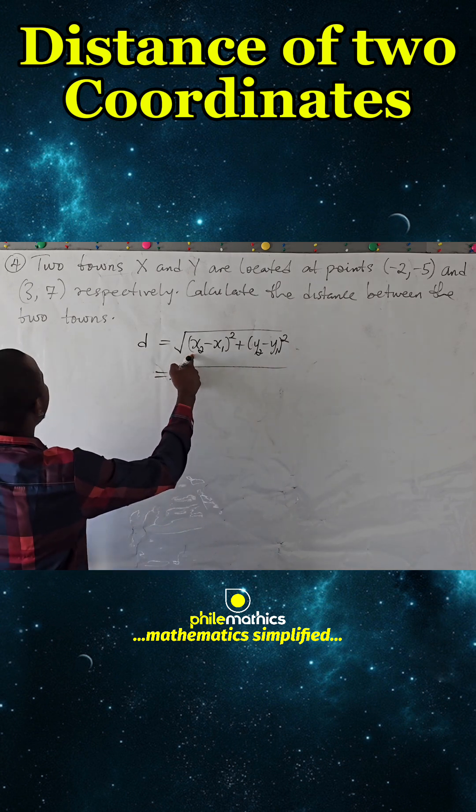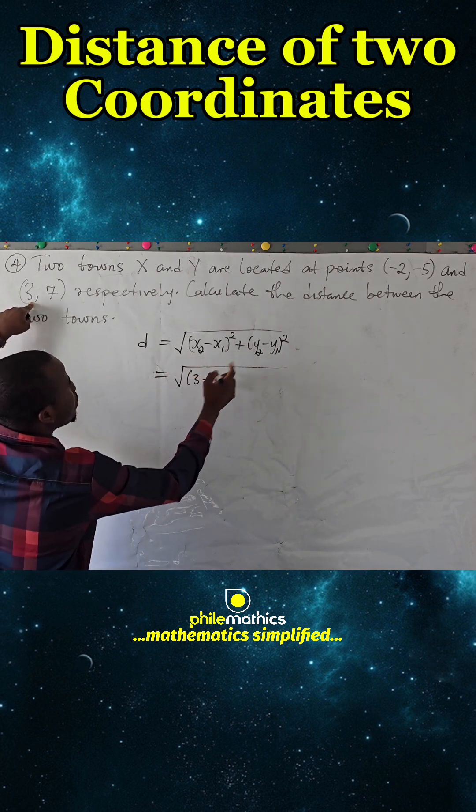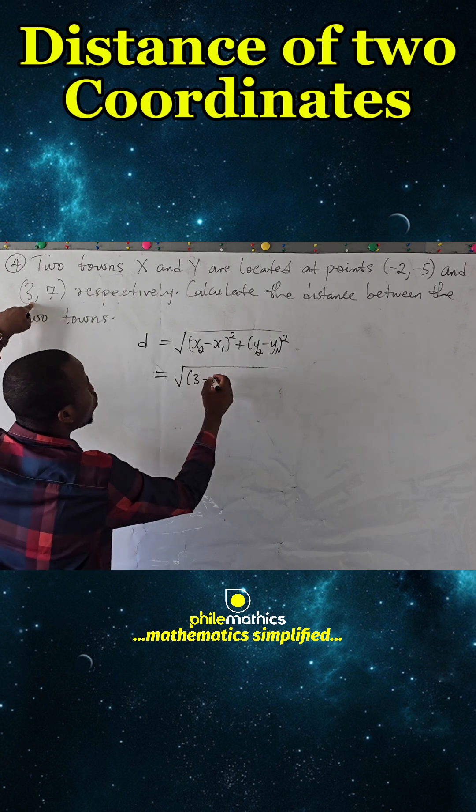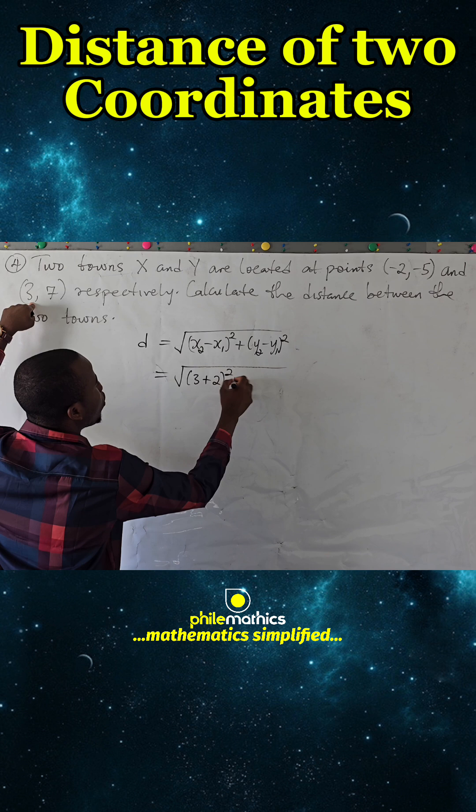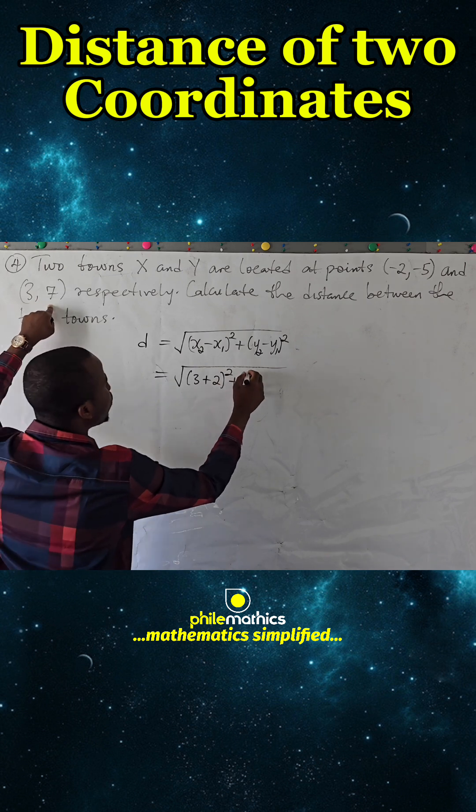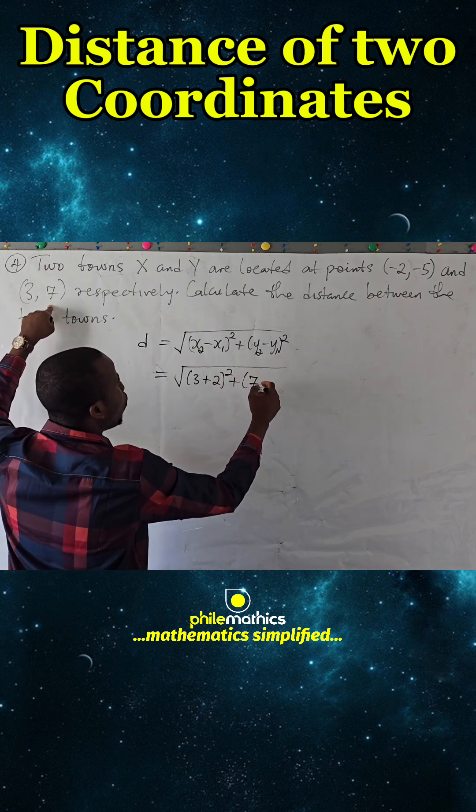x2 is 3 minus x1 is -2, and minus minus is plus, squared. Plus y2 is 7, y1 is -5, minus minus is plus, plus 5, all squared.